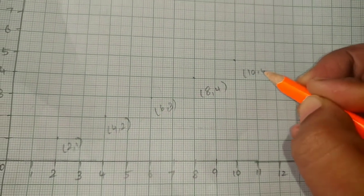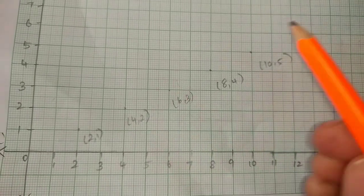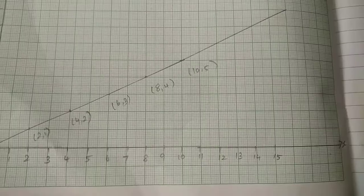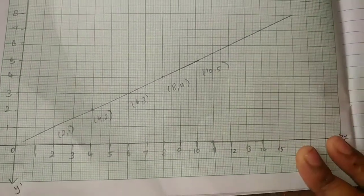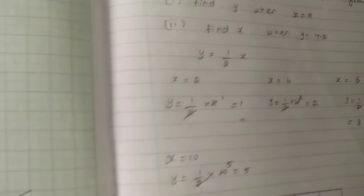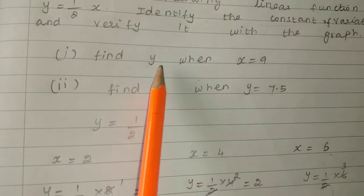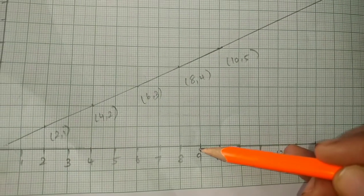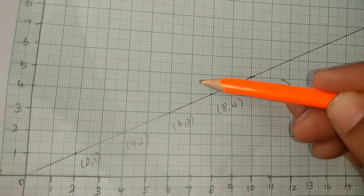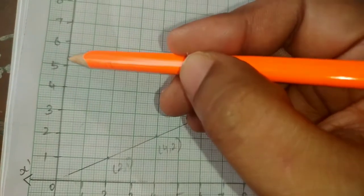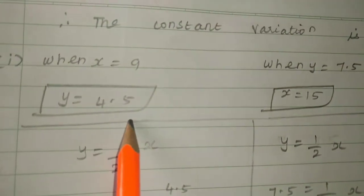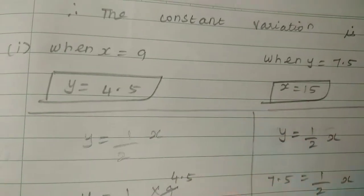Next, plot point (10,5). Join all the points with a straight line. To find y when x equals 9: go to x equal to 9 on the x-axis, draw a straight line up to the graph, then read across to the y-axis — y is approximately 4.5.